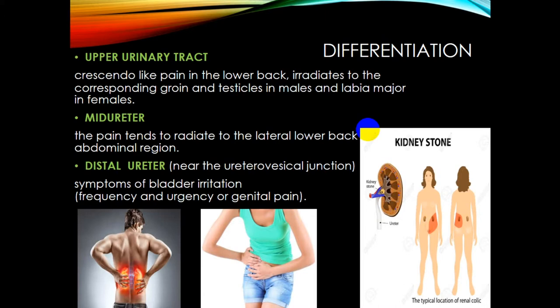Mid-ureter involvement — a condition of the middle part of the urinary tract — causes pain that tends to radiate to the lateral lower back or abdominal region. Problems in the distal ureter near the ureterovesical junction can be accompanied by symptoms of bladder irritation, including frequency and urgency of urination, and genital pain. Localization of pain corresponds to the position of the stone, and it may also present as only back or abdominal pain.